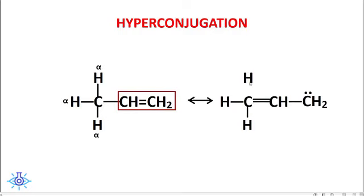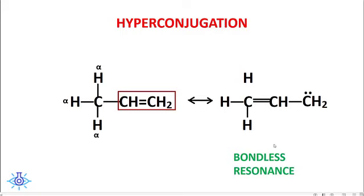This rearranges to a compound where there is no bond between C and H — the lone pair of electrons is now seated on that carbon. Though there is no bond between C and H, resonance still exists due to the overlap of pi orbitals. This is called bondless resonance. The conjugation here is between a sigma bond and a pi bond, hence called sigma-pi conjugation. Compounds with hyper conjugation are highly stable.